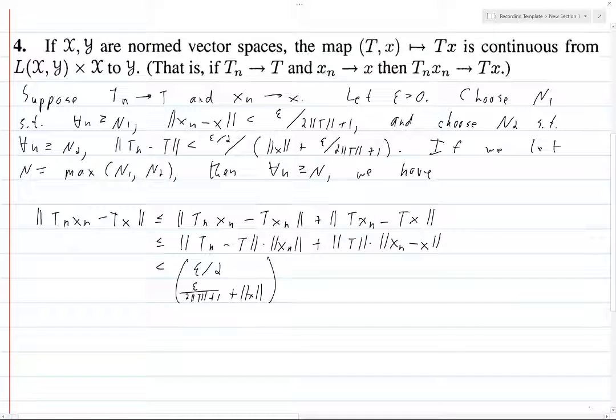So this thing here, and then we're going to multiply this by—well, xn is equal to xn minus x plus x, and we break that up using the triangle inequality, and so we get xn minus x plus norm of x.